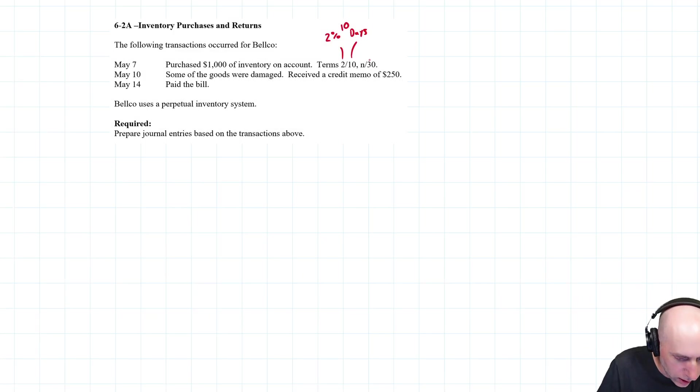The problem we're working on is 6.2a. It says the following transactions occurred for Belco: May 7 we purchased $1,000 of inventory on account, May 10 we return some of the goods, some were damaged, so they give us credit to our account, and May 14 we pay the bill.